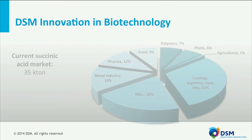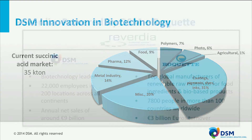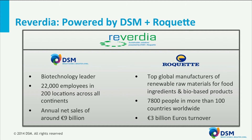Succinic acid is used in many different industries, but currently the market is relatively small with a yearly demand of approximately 35 kiloton. As the potential is present to become a bulk chemical, we decided not to develop and produce this alone. Therefore, we joined forces with a partner that has basically the same vision as us, and preferably with complementary competences to create added value. We found a partner in Roquette. This company is one of the top manufacturers in the world for renewable starch and starch derived products and has already experience in bio-refineries.